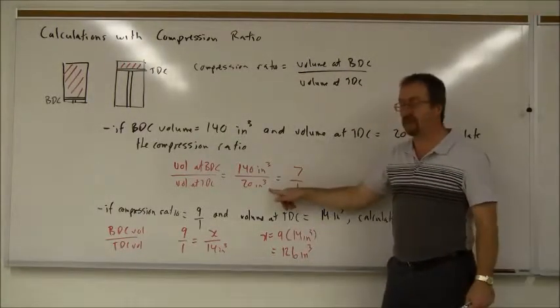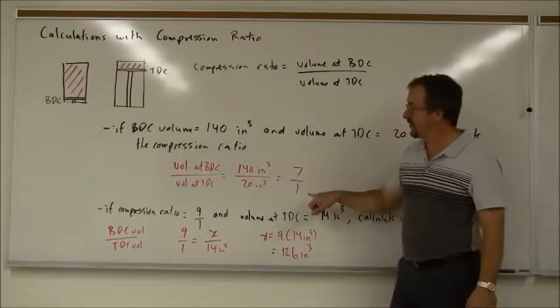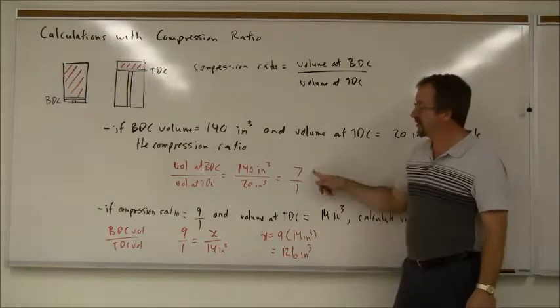So that's 140 cubic inches over 20 cubic inches. If I divide top and bottom by 20 cubic inches, you get a ratio of 7 to 1. So that's our ratio.